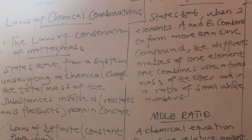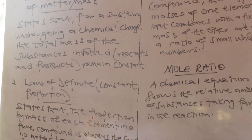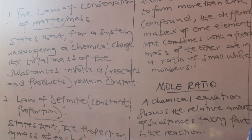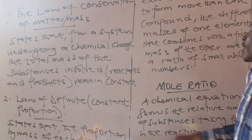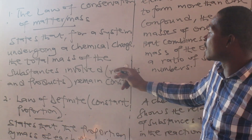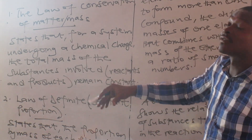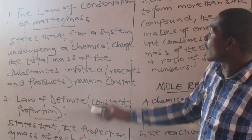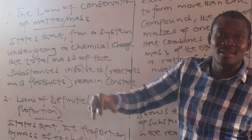The law of conservation of matter states that for a system undergoing a chemical change, the total mass of the substance involved as a reactant or product remains constant. So when you have something undergoing a chemical change, your masses remain the same. That's why it's a law of conservation — we are conserving the mass. The mass doesn't change.